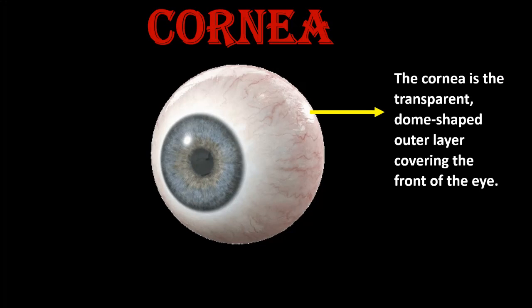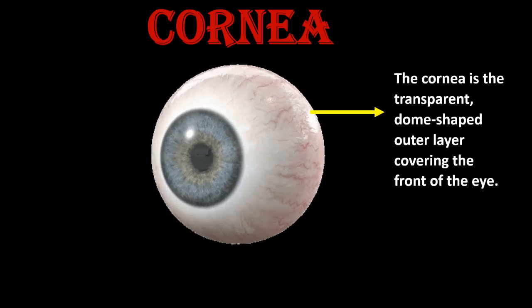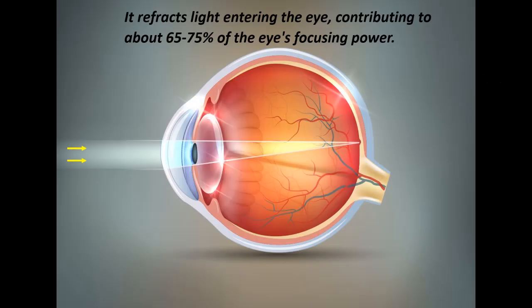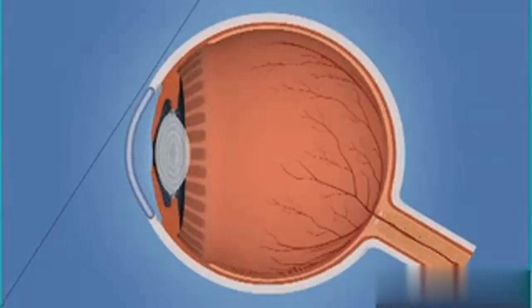Cornea: The cornea is the transparent, dome-shaped outer layer covering the front of the eye. It refracts or bends light entering the eye, contributing to about 65–75% of the eye's focusing power.